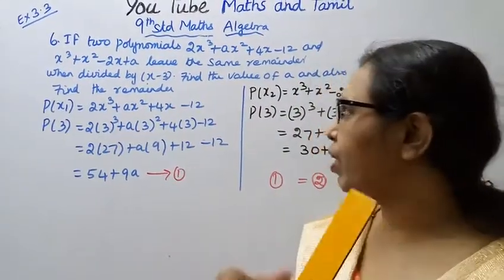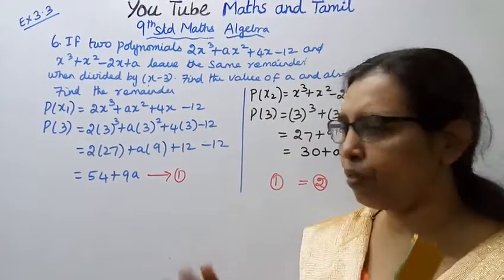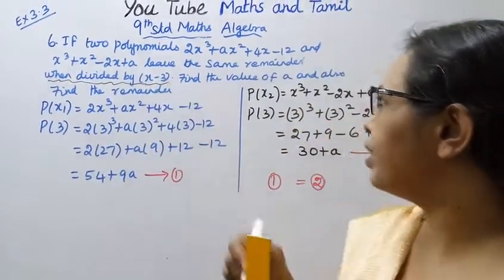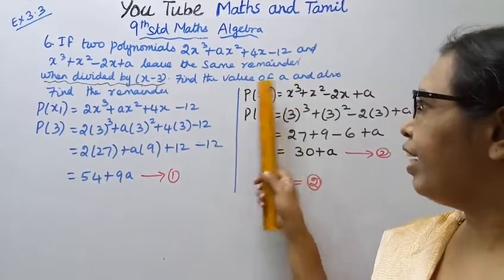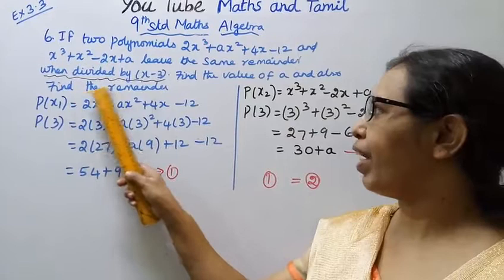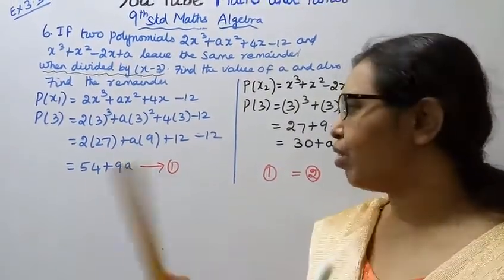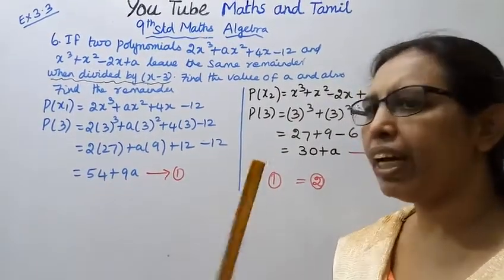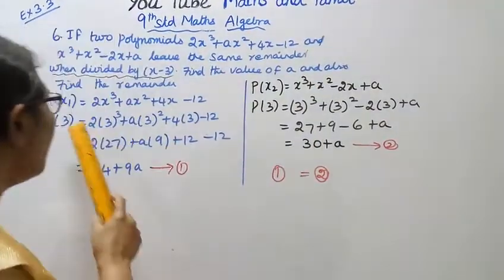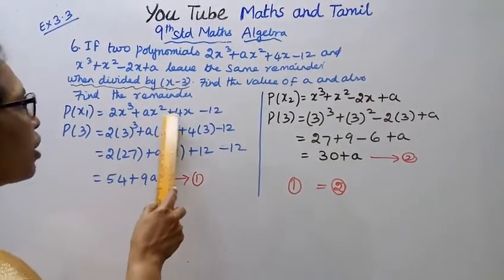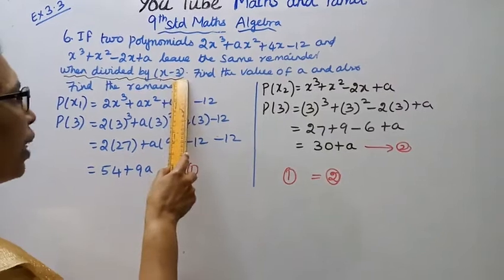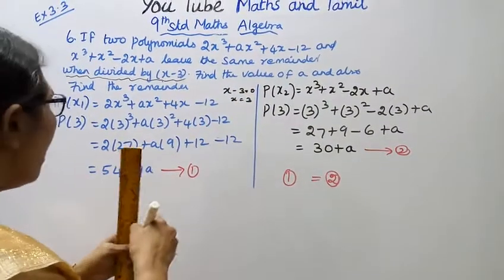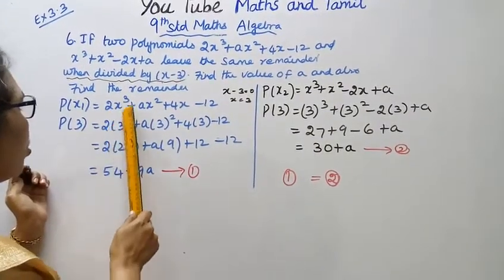The two polynomials leave the same remainder when divided by x - 3. Setting x - 3 equal to 0 gives x equal to 3. Now we evaluate p(3) for each polynomial.